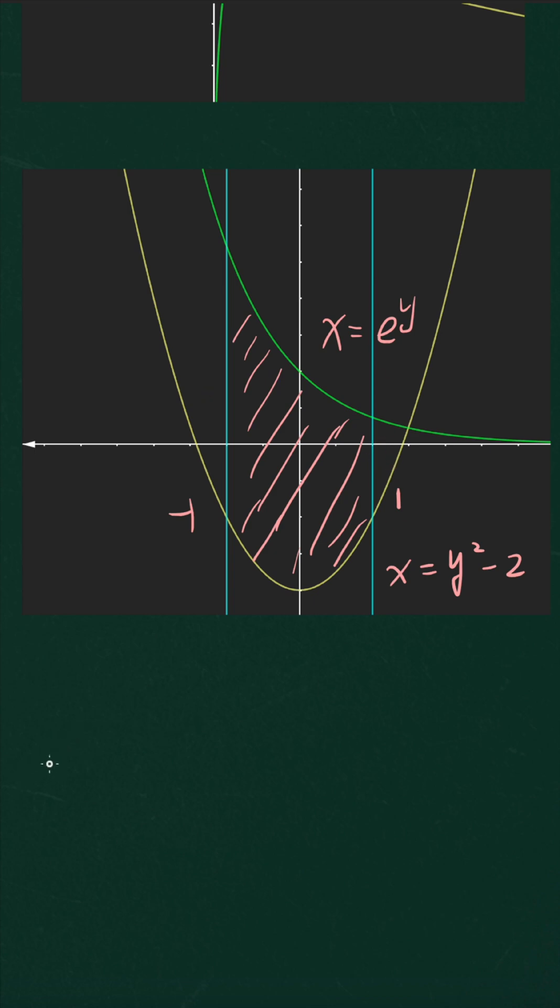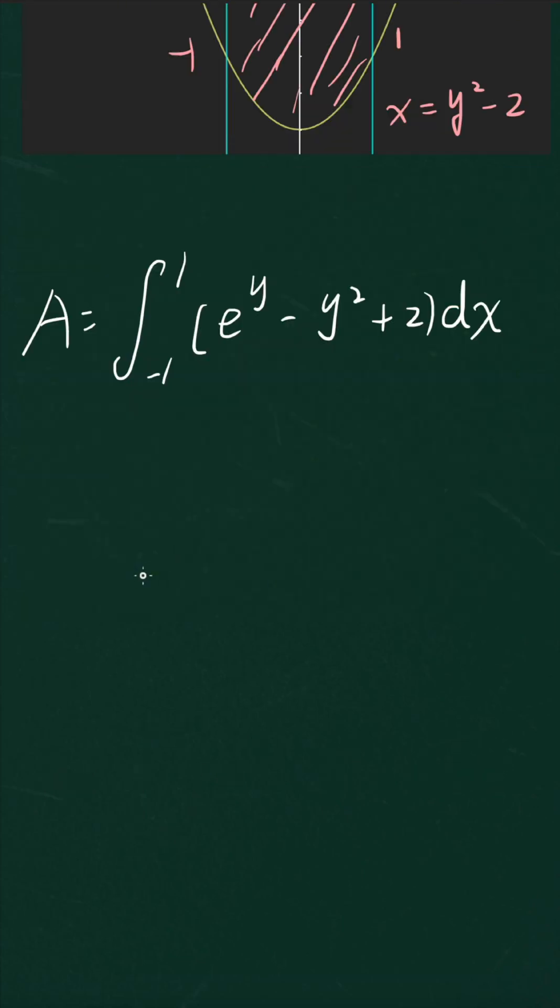We're going to use a formula we talked about yesterday. A equals the integral from -1 to 1 of e^y - y² + 2 with respect to x. I didn't do the calculation yesterday because it was pretty late and I was sleepy, so I'm going to do it today.